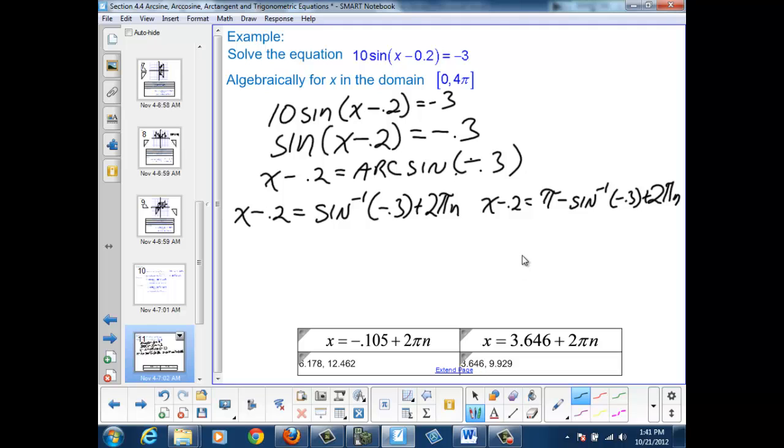Adding another 2π would take me outside my restricted domain. So these are the four solutions.